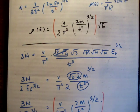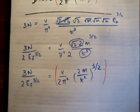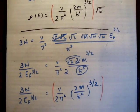So as a result, I can make the following conclusion: that rho of E, the density of states in energy space, is equal to 3N over twice E Fermi.